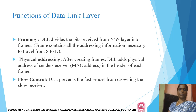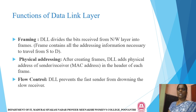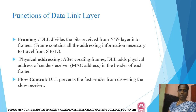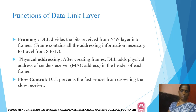Functions of the data link layer: Framing — the DLL divides bits received from the network layer into frames, and each frame contains all address information from source to destination. Physical addressing — after creating a frame, the DLL adds the physical address of the sender and receiver in the header of each frame, to identify sender and receiver. Flow control — the DLL prevents a fast sender from overwhelming a slow receiver; this difference in speed is called flow control.